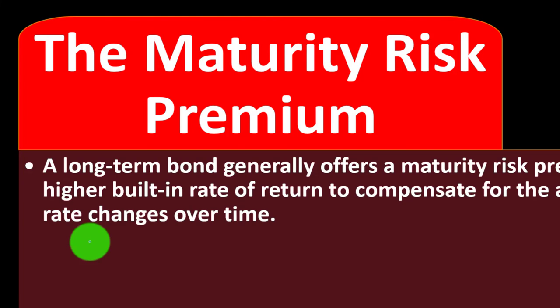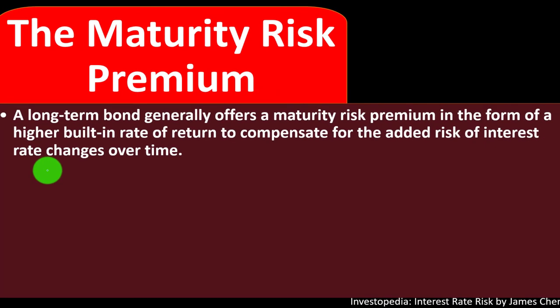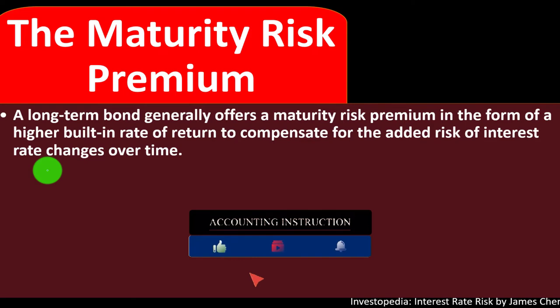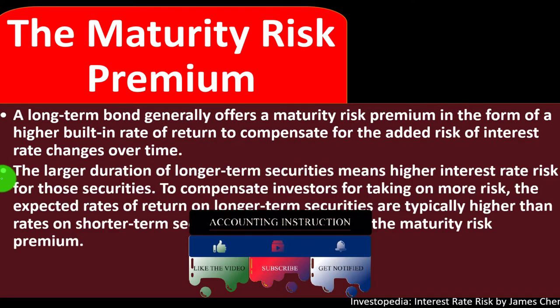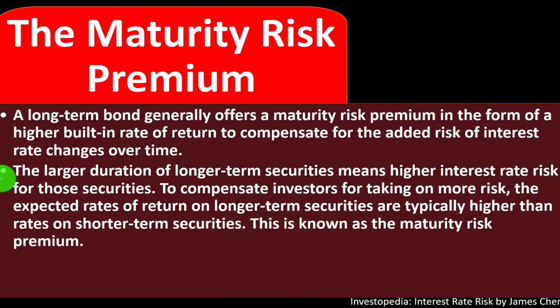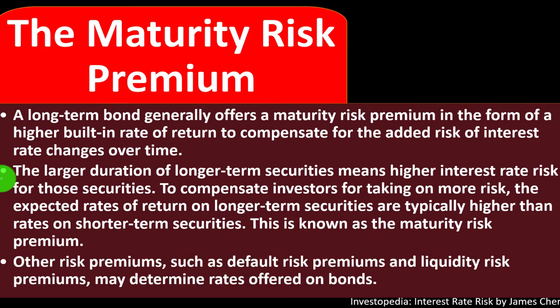The maturity risk premium: a long-term bond generally offers a maturity risk premium in the form of a higher built-in rate of return to compensate for the added risk of interest rate changes over time. The larger duration of long-term securities means higher interest rate risk. To compensate investors for taking on more risk, the expected rates of return on longer-term securities are typically higher than rates on short-term securities. This is known as the maturity risk premium. Other risk premiums such as default risk premiums and liquidity risk premiums may also determine rates offered on bonds.